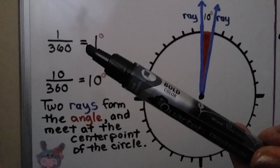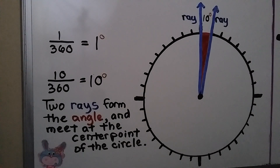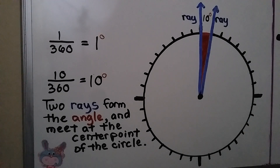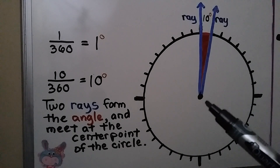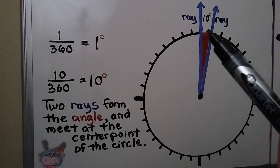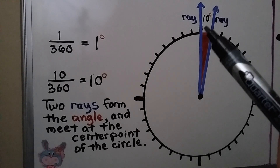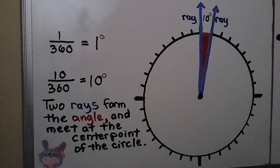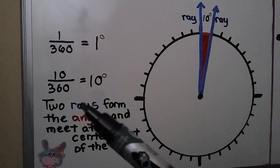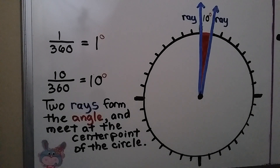1/360th is equal to 1 degree, and 10/360ths is equal to 10 degrees. Two rays form the angle — we have a ray here and a ray here — and they meet at the center point of the circle, which would be the vertex of the angle. So in this angle there are 10 degrees. We could split this angle into 10 tiny parts, and each part would be 1 degree. For 10/360ths, it's 10 degrees — 10 parts of the 360 degrees of a circle.